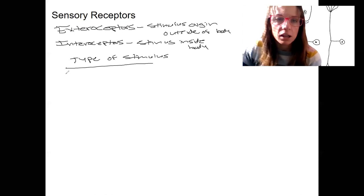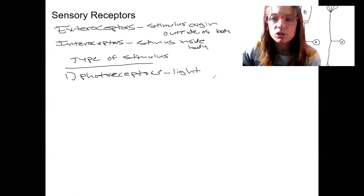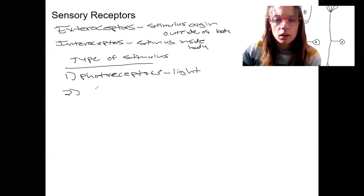So we've got photoreceptors. What do these detect? Light. These are special receptors that are able to transduce light into a neural signal. So cool. We've got thermoreceptors. Detect temperature.